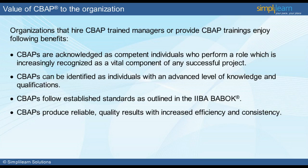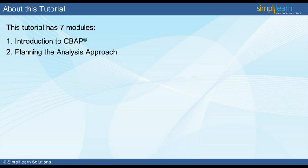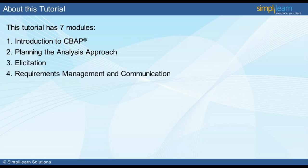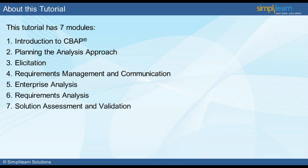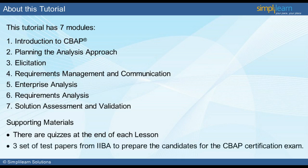This course is categorised into seven modules. The first module will introduce us to CBAP. In the second module, we will find out how to plan the analysis approach. Elicitation is dealt with in detail in the third module. The fourth module is on requirements management and communication. Enterprise and requirements analysis covers the fifth and sixth modules respectively. Finally, we will look into solution assessment and validation. Quizzes are provided at the end of each module. Additionally, there are three sets of test papers from IIBA which will help the candidate in preparing for the certification exam.